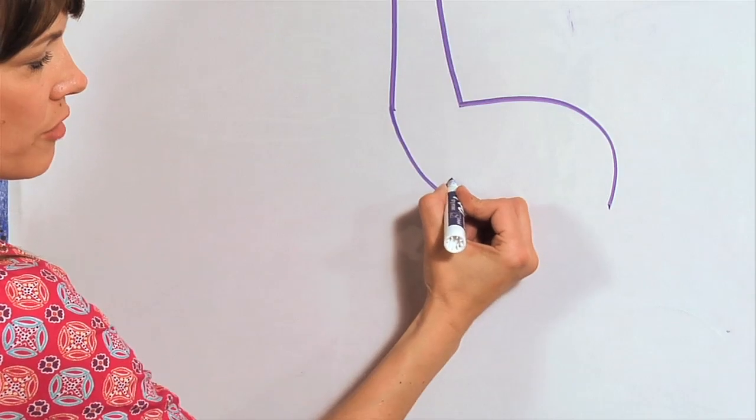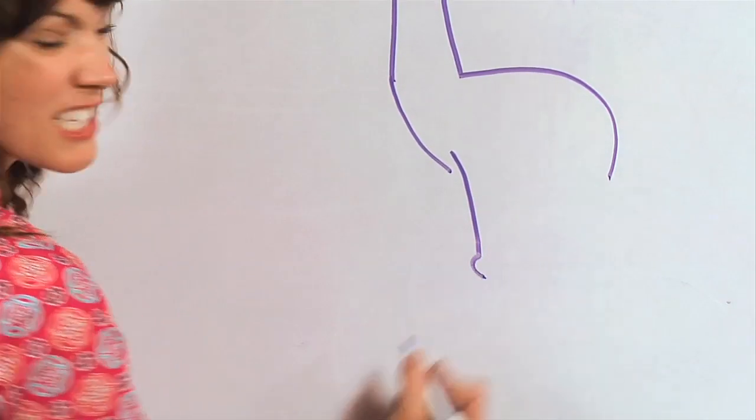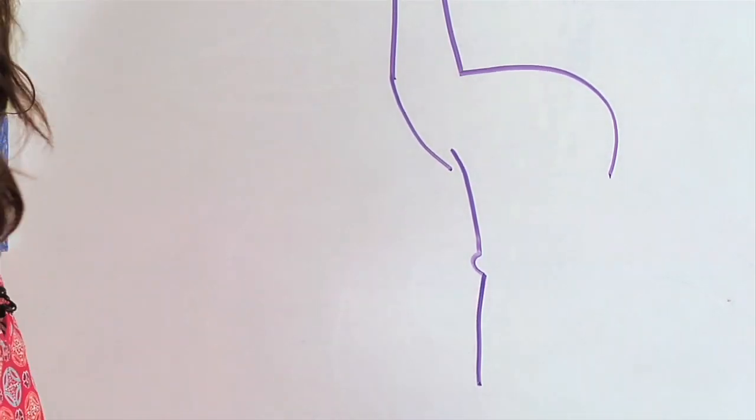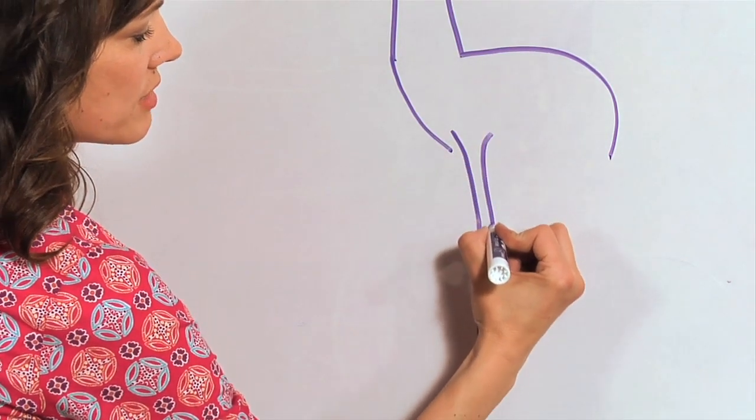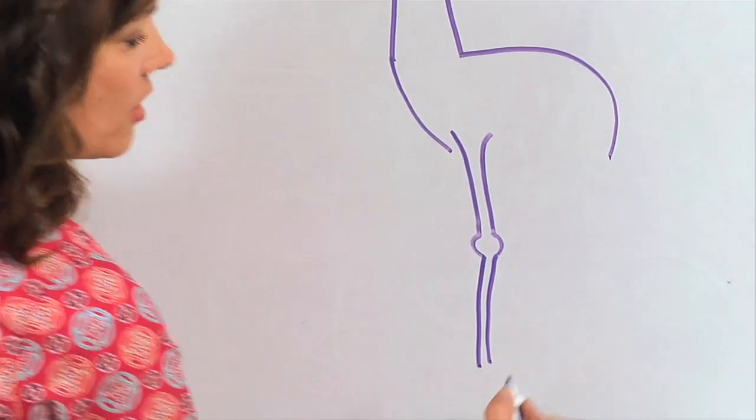I'm going to come down. I'm going to go curve out just a little bit where their knees are, and down. Now let's come over on this side, and I'm going to curve out just a little, and go down, around, down.